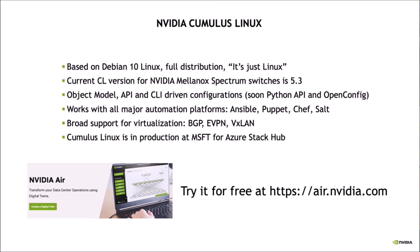Cumulus Linux is object-model, API, and CLI driven. We have a CLI called NVUE. The CLI is a client of the API, and everything flows down into an object model which gives you full configuration for the switch. In the 5.4 and 5.5 timeframe, you'll start seeing a Python API and some OpenConfig features as well. Because we're just Linux, we work with Ansible, Puppet, Chef, Salt — everything you'd expect from a Linux-based OS. If you have an existing tool set to manage Linux servers, you can use that to manage elements of Cumulus Linux.